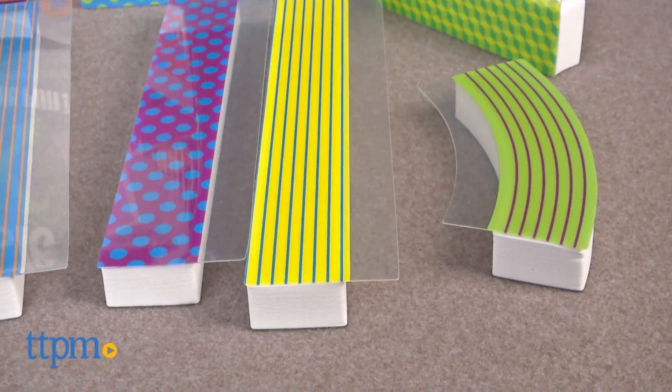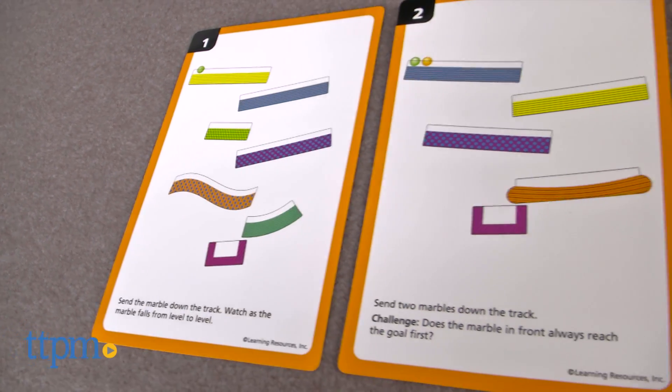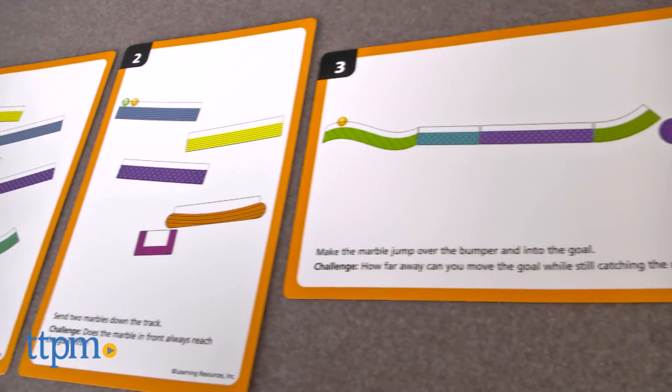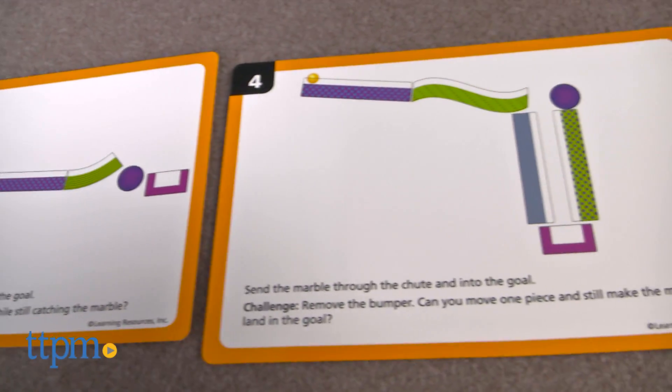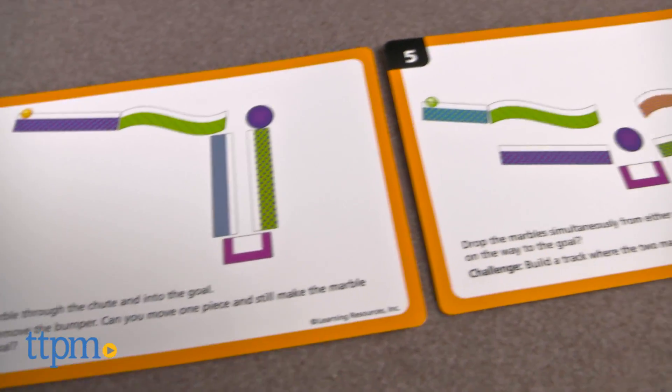It comes with 10 activity cards that show kids how to configure the pieces, and kids must successfully place the correct pieces on a magnetic surface so that a marble, or marbles, makes it from the top of the marble run into the goal.